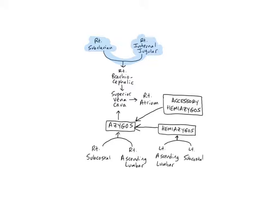The brachiocephalic veins form through the union of the subclavian and internal jugulars. The brachiocephalics drain into the superior vena cava, which delivers blood into the right atrium of the heart. The brachiocephalics drain blood from the head, neck, upper limbs, mammary glands, and superior thorax.